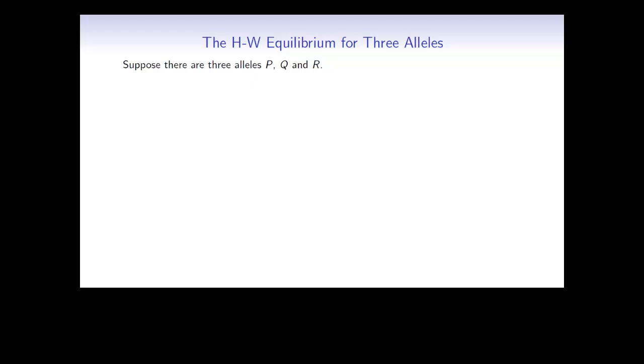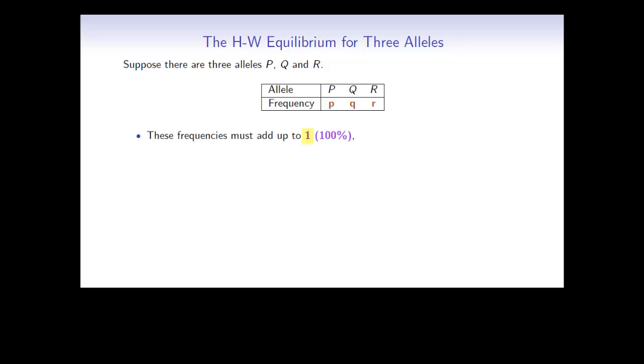Suppose for now that there are three alleles, although this method would also work for more or fewer of them. If the alleles are P, Q, and R, let's use the lowercase letters for the corresponding frequencies. These frequencies must add up to 1, 100%, or in other words p plus q plus r equals 1.